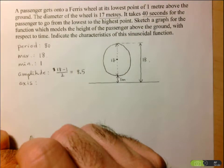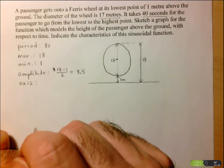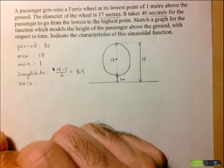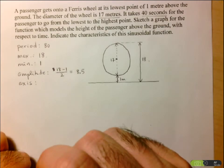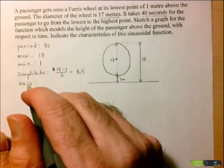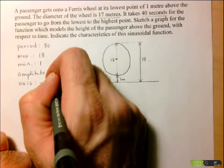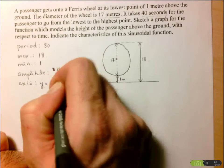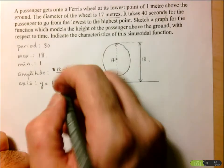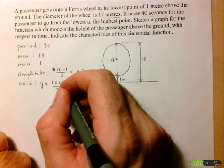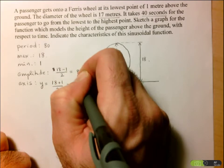Now, for the axis, remember that the axis is located between the max and the min. So what we're looking for is the average between the max and the min. So in order to find the axis, it's y equals the max plus the min, divided by 2. So that gives us y equals 18 plus 1, 19 divided by 2, that's 9.5.